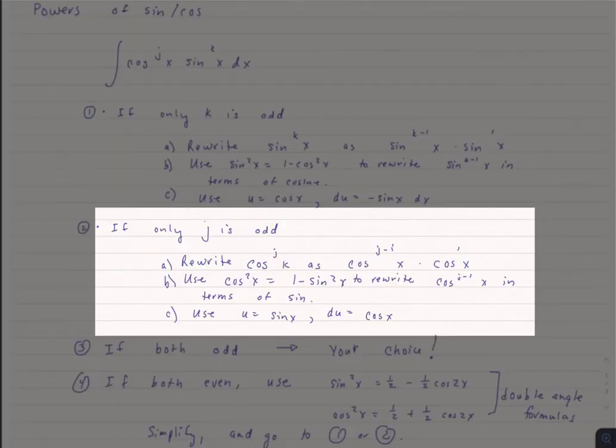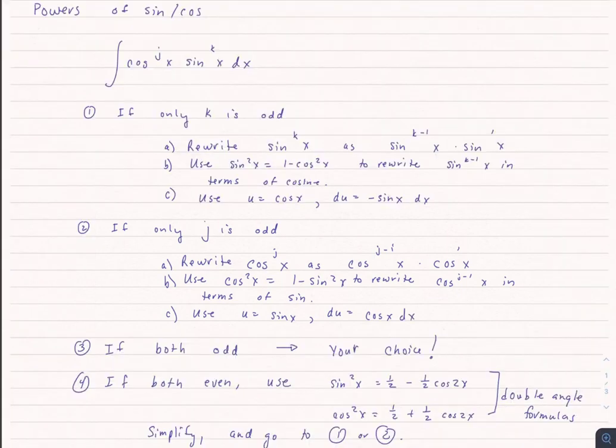If on the other hand only j is odd, then instead of rewriting the sine, we're going to rewrite cosine. Cosine to the j minus 1 of x times cosine of x, and we're going to this time use cosine squared of x equaling 1 minus sine squared x to rewrite the cosine j minus 1 in terms of sine. And then our u substitution will be u equals sine x and du is cosine x dx.